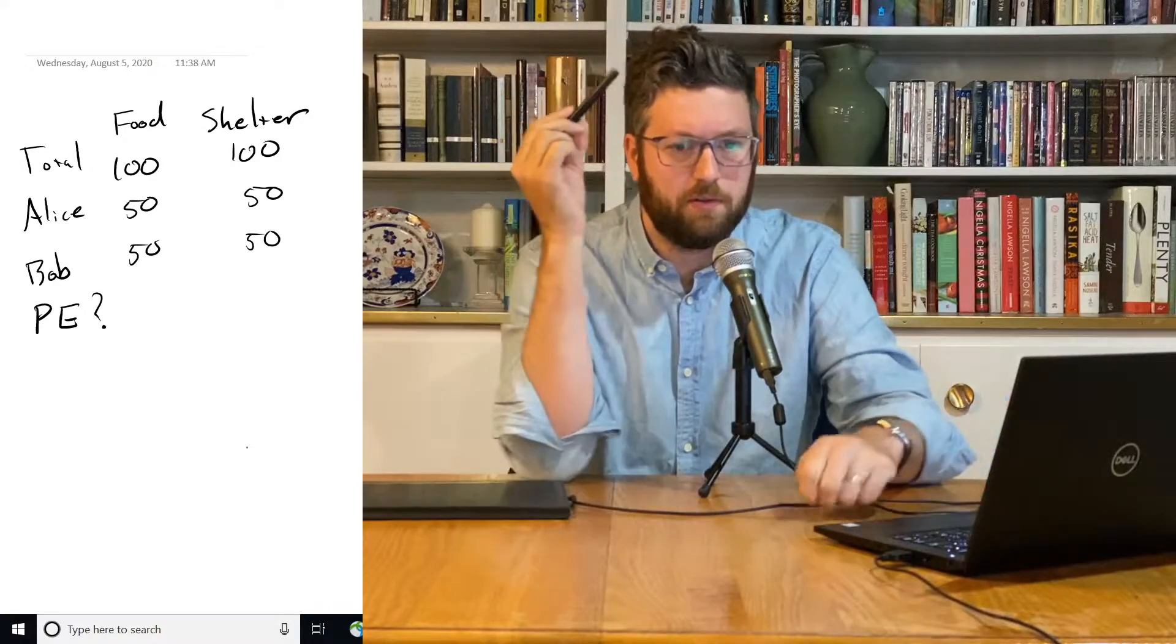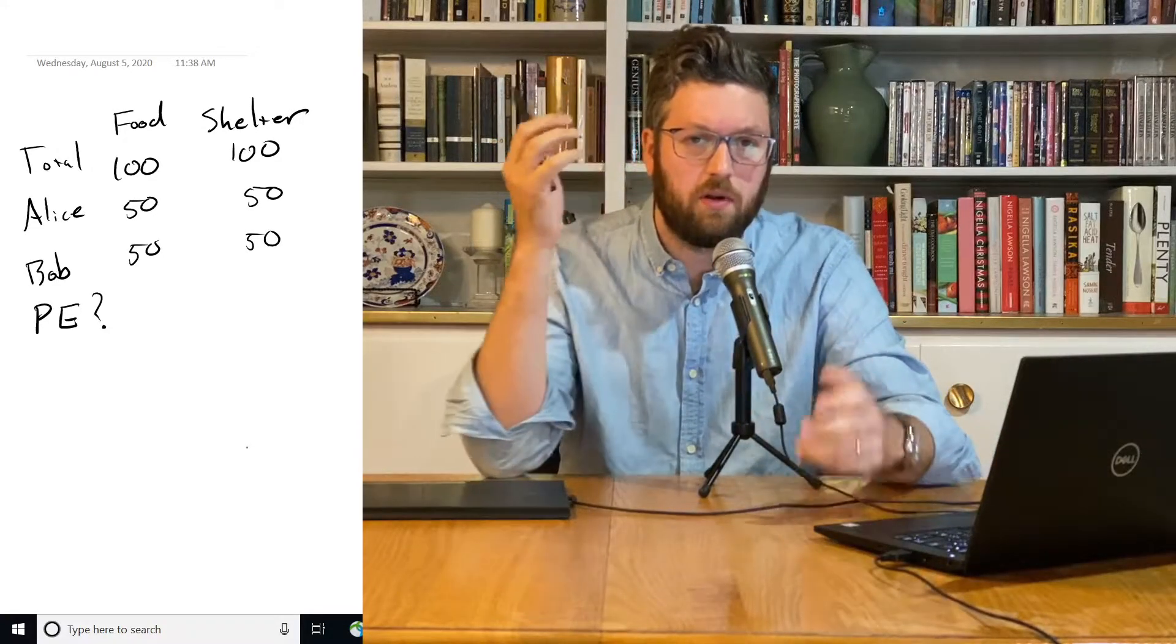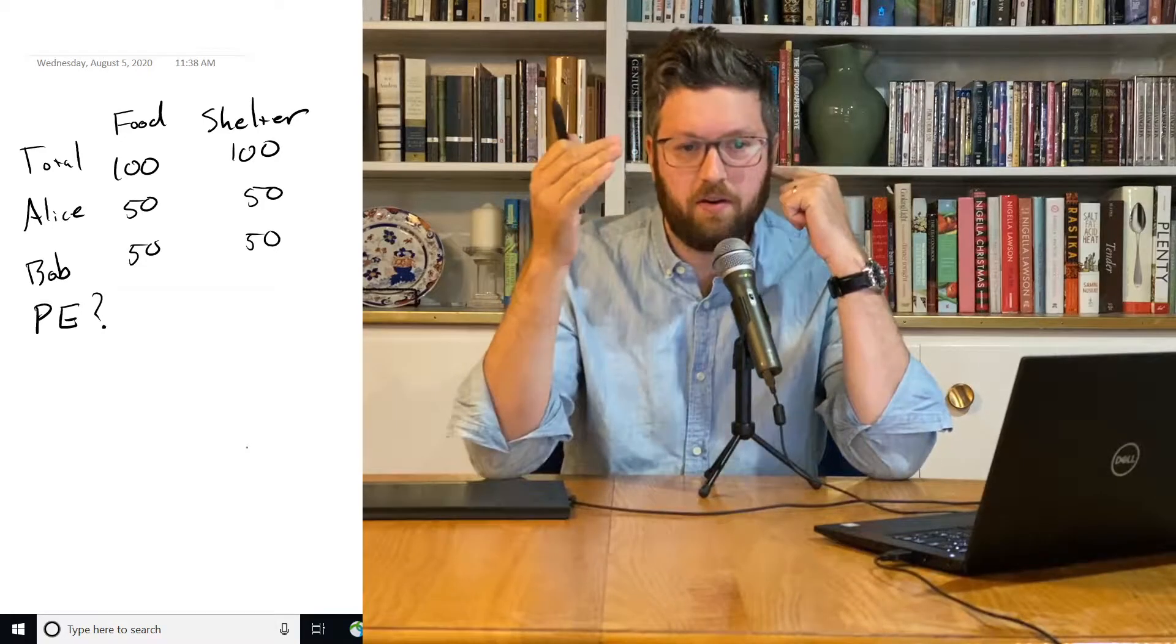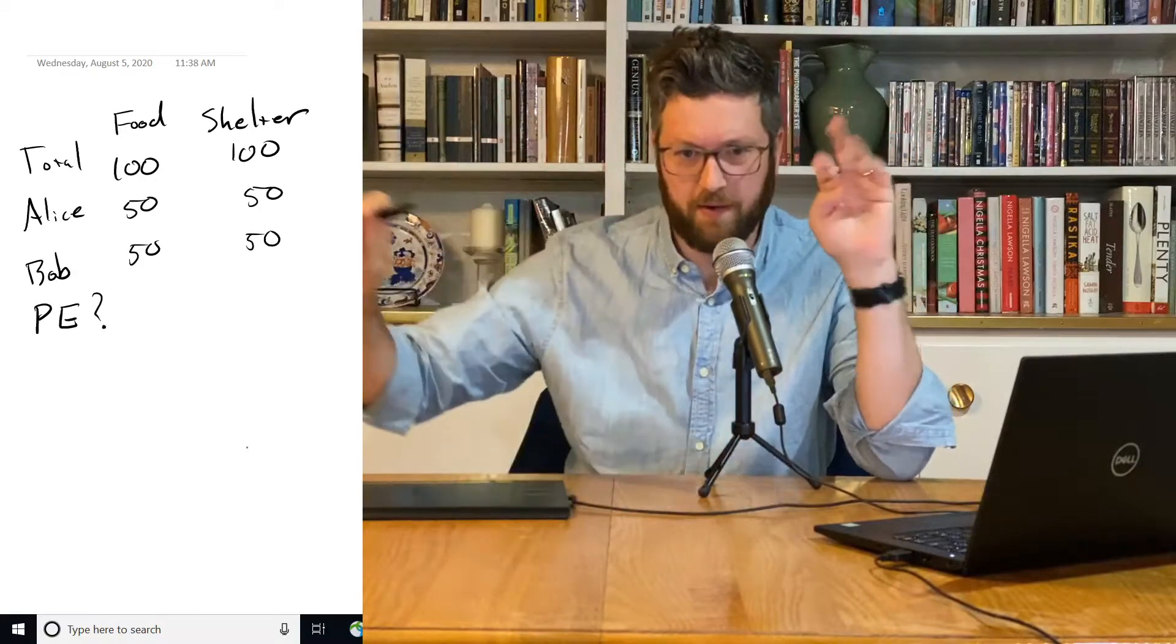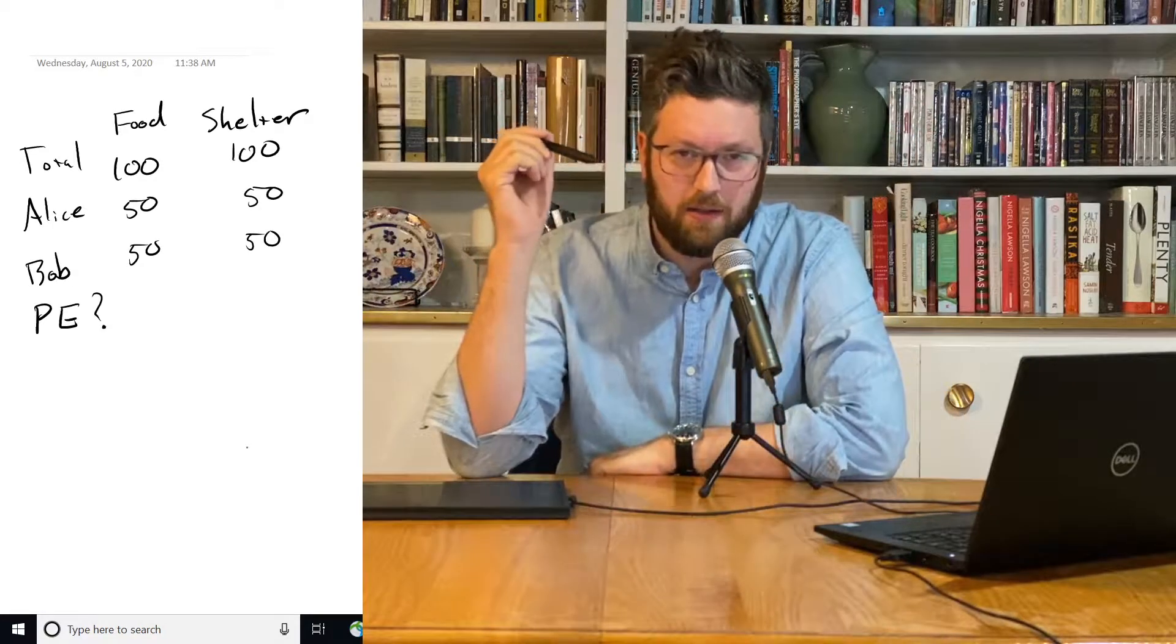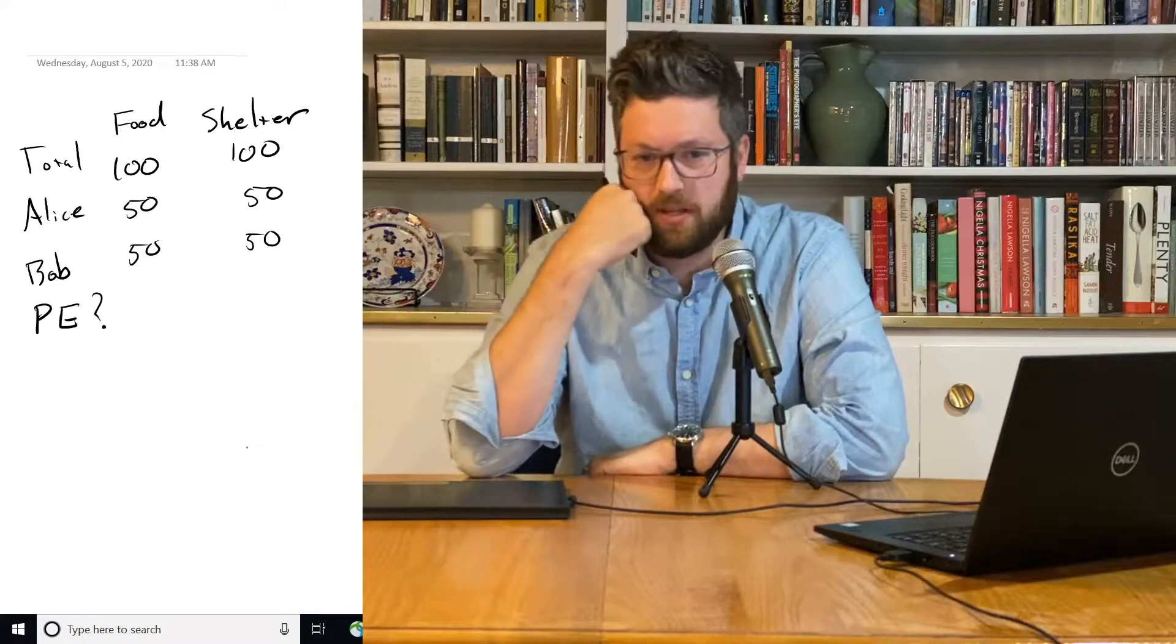Are these Pareto efficient? In the first one, we've got 100 food and 100 units of shelter to allocate between only two colonists. We're ignoring everybody else for now. And we've split it 50-50. Is that Pareto efficient?